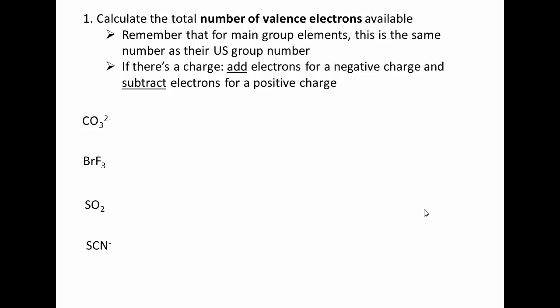So for the carbonate polyatomic ion, CO3 2-, carbon comes in with 4 electrons because it is in group 4. There are 3 oxygen atoms. Each of those comes in with 6 valence electrons because it is in group 6. And we add 2 electrons because it has an overall charge of negative 2. This gives us a total of 24 valence electrons for the structure.